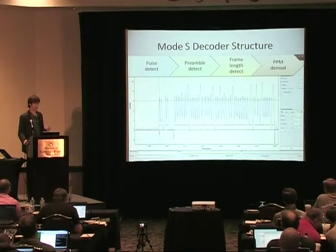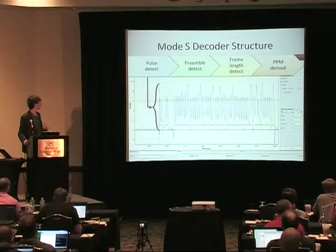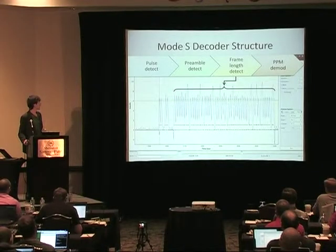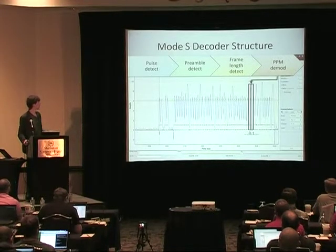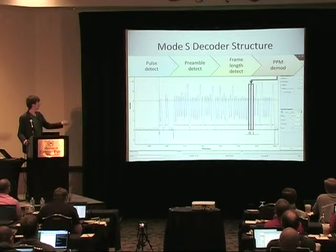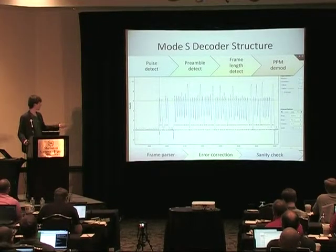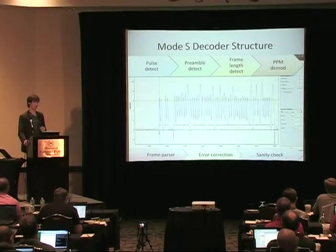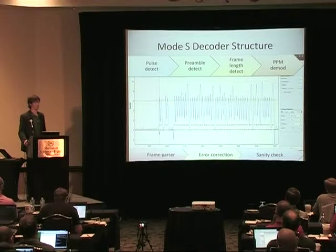So what you actually have to do: detect the pulse, preamble, length of the entire frame, look at the early-late chips, and then once you have your ones and zeros you have to do a whole bunch of other things to make sure the data you're getting is actually sane and makes sense in terms of a tracking application. This is actually quite tough.